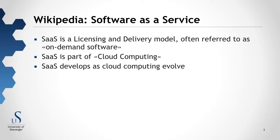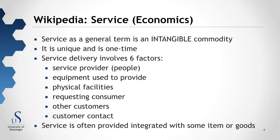To go a bit more into detail, we have the Wikipedia on service, in general about the economic side of service. This tells us that service, as a general term, is an intangible commodity — meaning it's not something we can have as a gadget in our hands, but it's unique and it's one time. Normally, service delivery involves six factors.